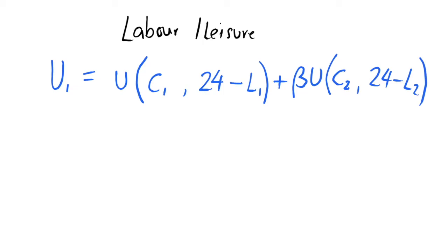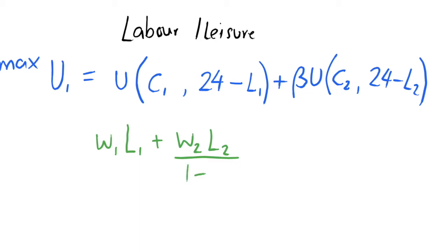We obviously want to maximise our utility, but we do have a budget constraint. We can only consume as much income as we have, but we don't just have y1 and y2 anymore — our income comes from the wage rate multiplied by how many hours we work; we get paid by the hour in this model. So our budget constraint says: income in period 1 is the wage rate times hours worked, plus the present value of income in period 2, which is the wage rate times hours worked in period 2 discounted by the interest rate. This present value of income equals our present value of consumption.